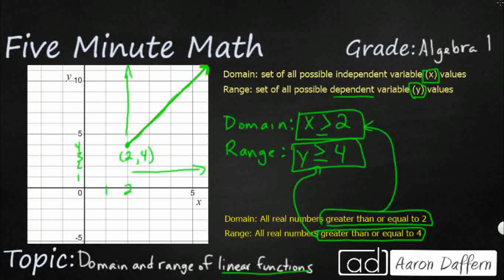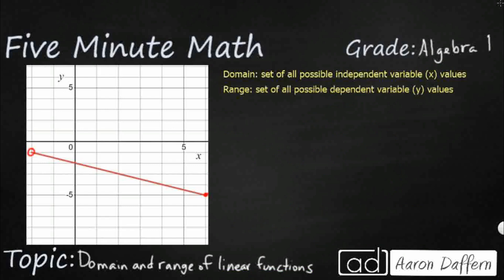Let's look at another example. Again, we are looking for the domain and range, but now we have a line segment. We've got a closed circle on one end and an open circle on the other, which is going to change what our inequalities look like. The closed-circle endpoint is at x = negative 2, y = negative 1, and the open-circle endpoint is at x = 6, y = negative 5.